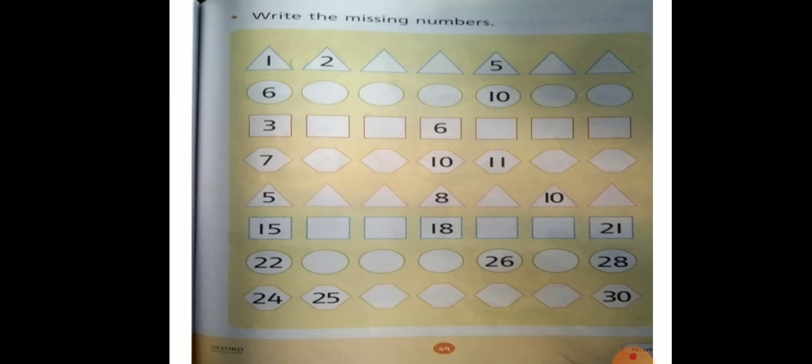In this page you will write the missing numbers. First line you will see first number is one, two. What is the after number of two? Is three. After number of two is three, you will write three.